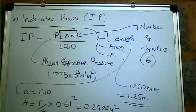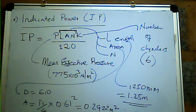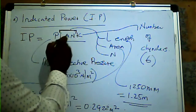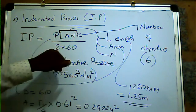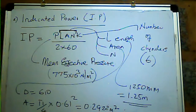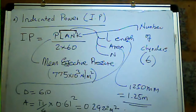The formula is IP = P·L·A·N·K over 120. Why 120? This 120 can be written as 2 × 1 × 60 — because we are told there are two strokes per revolution (it's a 4-stroke engine) and the speed is given as 2 revolutions per second, meaning 120 revolutions per minute. The 60 converts minutes to seconds.